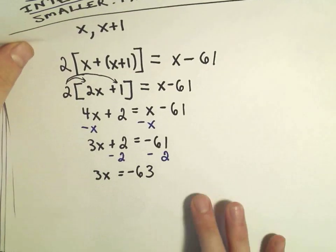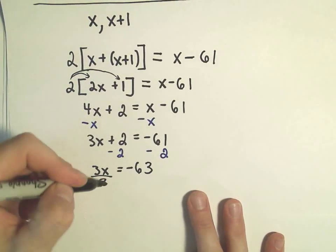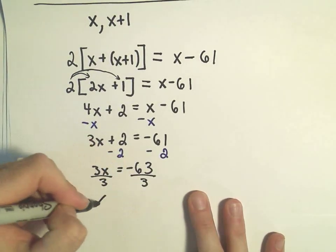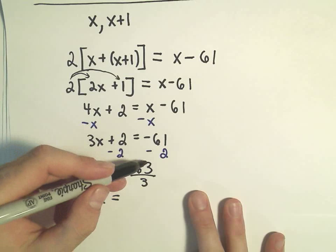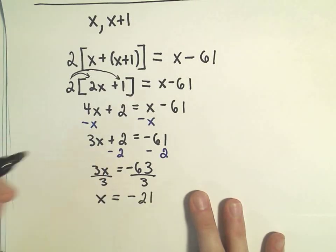Now I'm simply going to divide both sides by 3. If you take negative 63 and divide it by 3, we'll get negative 21.